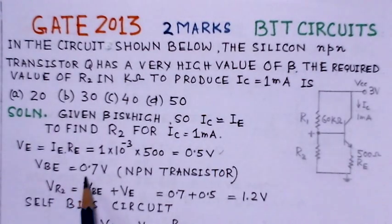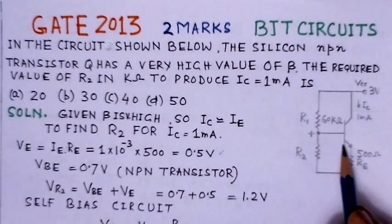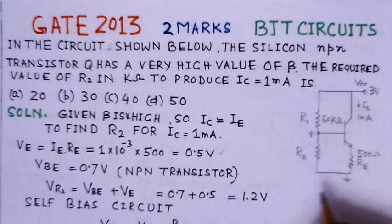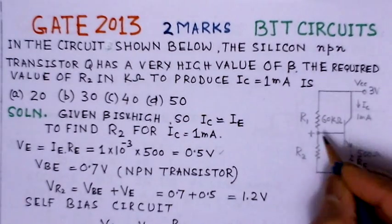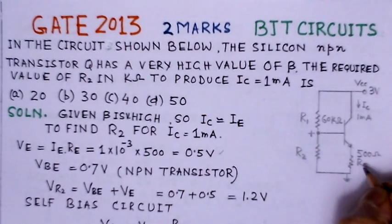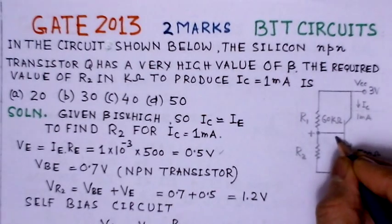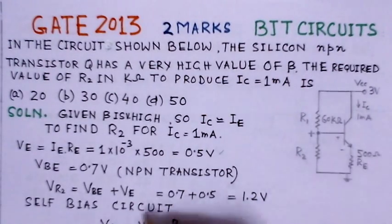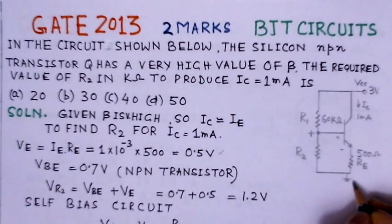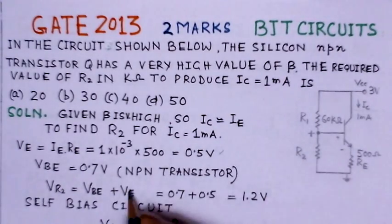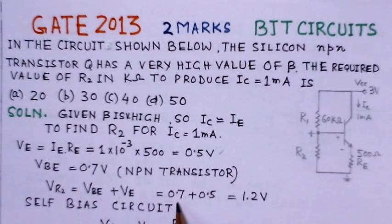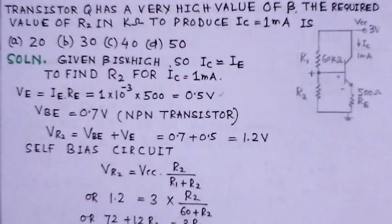Now, it is given that VBE, the base-emitter forward bias drop is 0.7 volts. So, we could get the value for VR2. This VR2, the voltage at this point VR2 is VBE, this voltage VBE plus VE, the voltage VE here. So, we can write here, VBE is 0.7 and VE is 0.5 we have already determined. So, this comes out to be 1.2 volts.